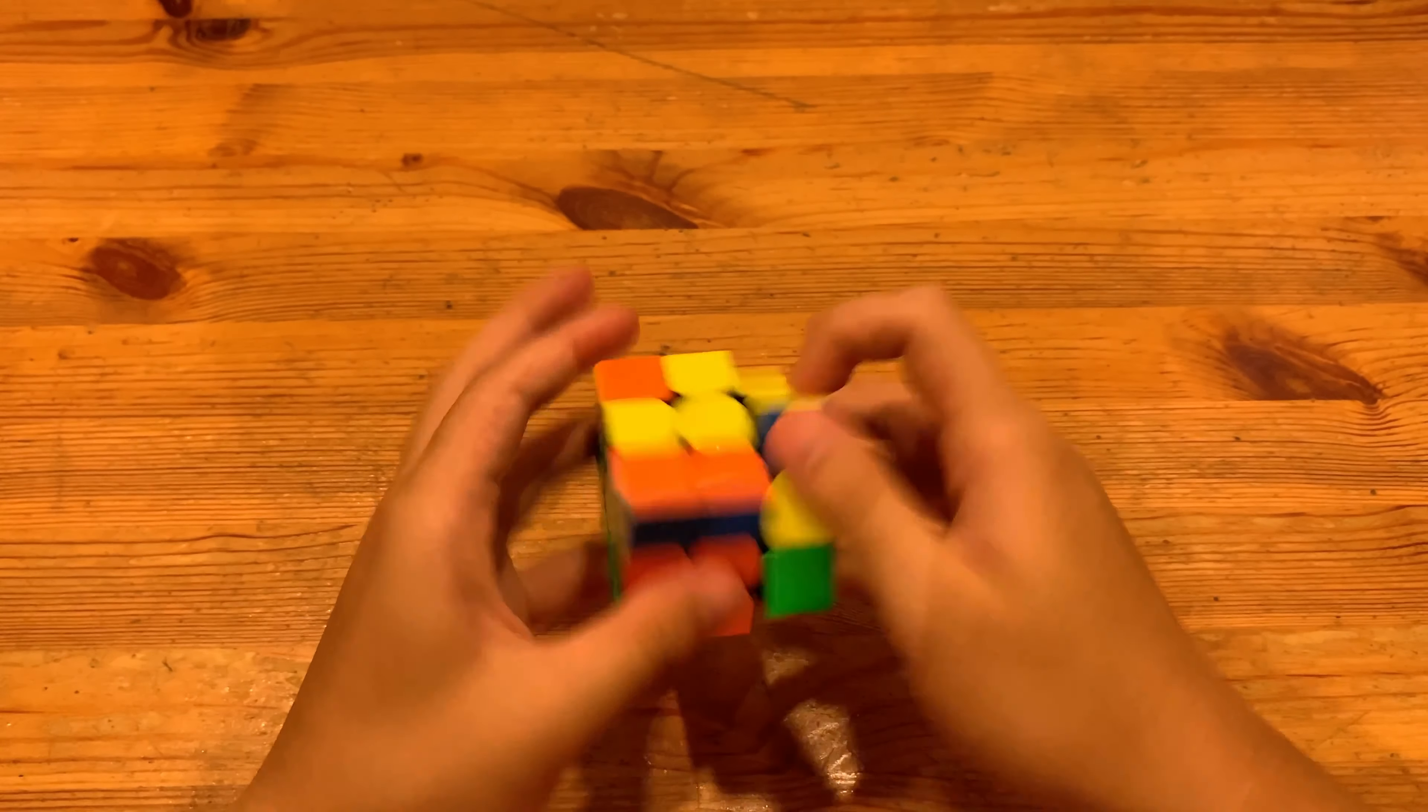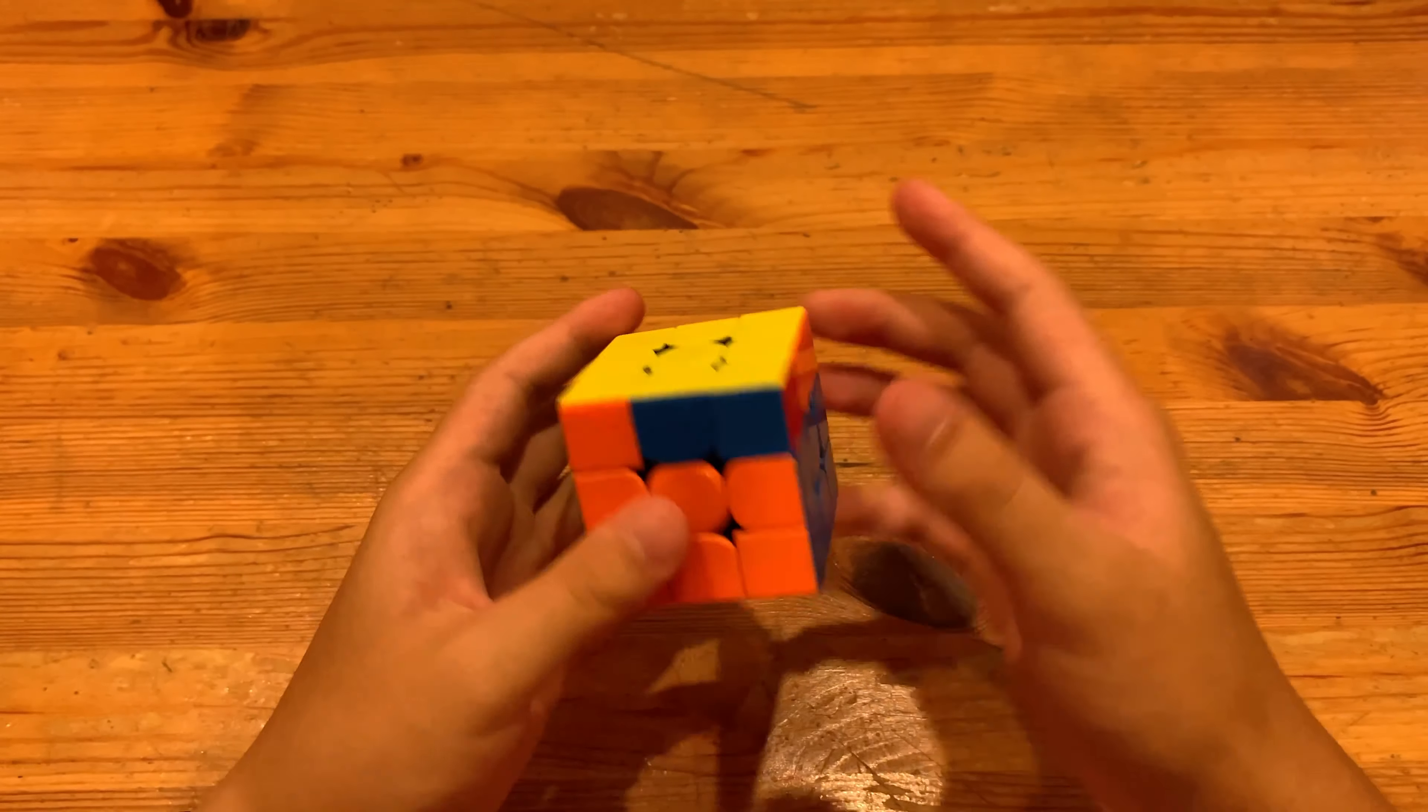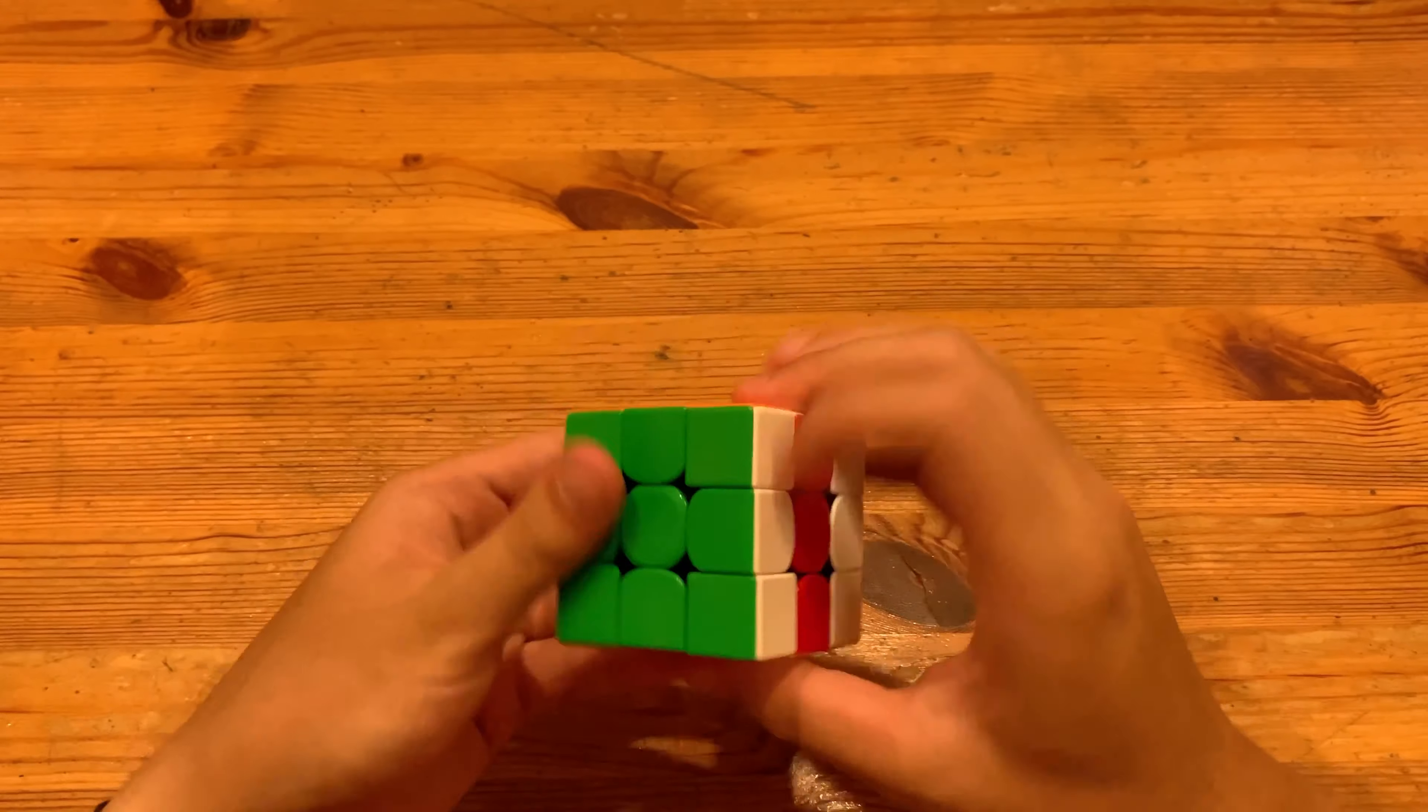So you can just do that, but he just inserted the pair and then did an anti-sune and then J perm. And I'll be showing the solution again.